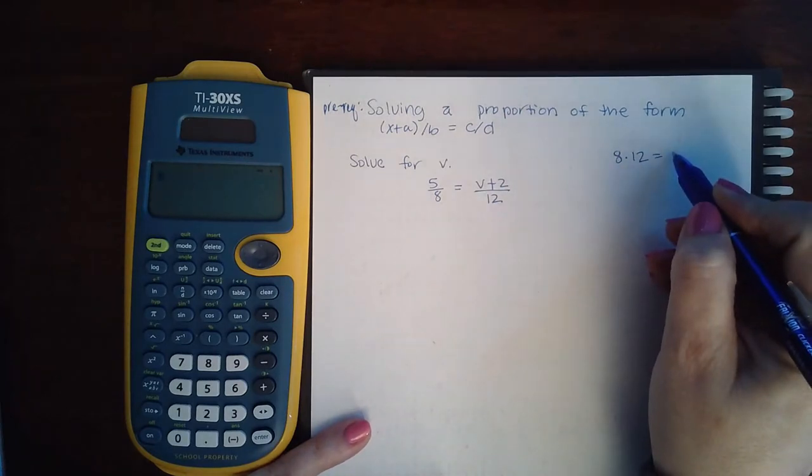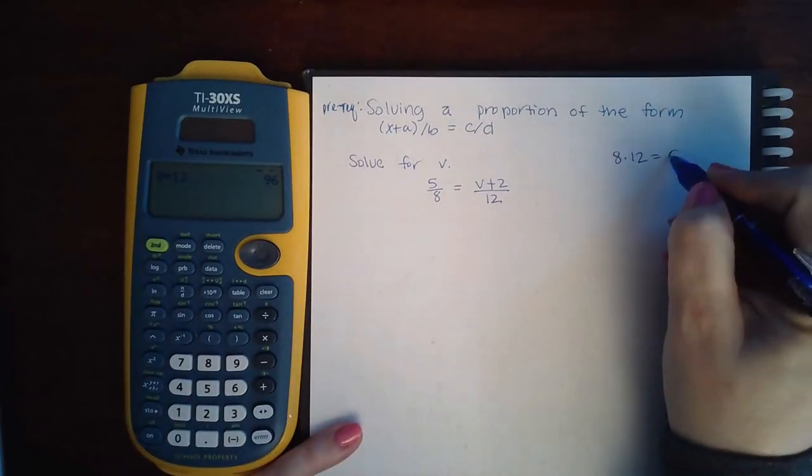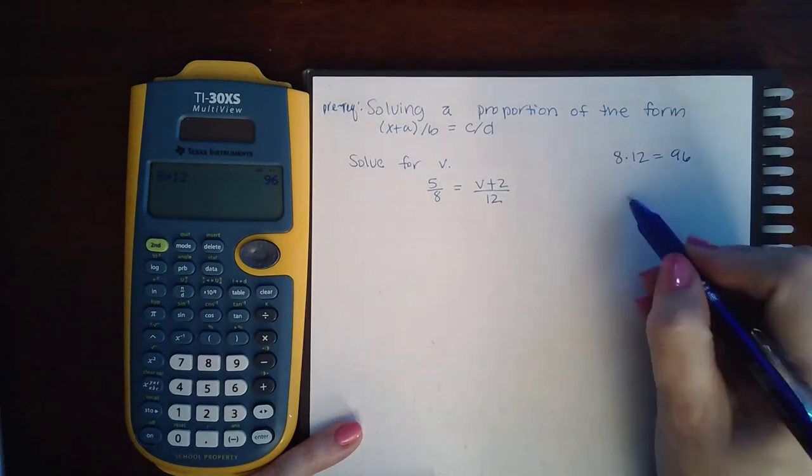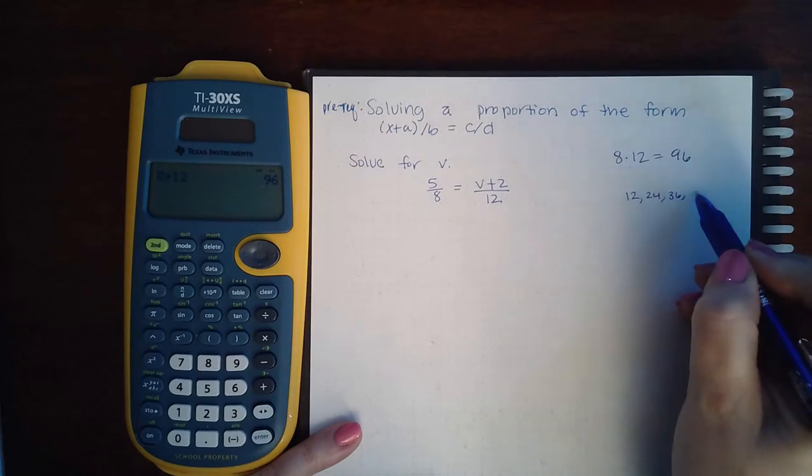Or you can find the lowest common denominator by listing the multiples of 12 and then finding the first one that 8 will go into, and it's actually 48.